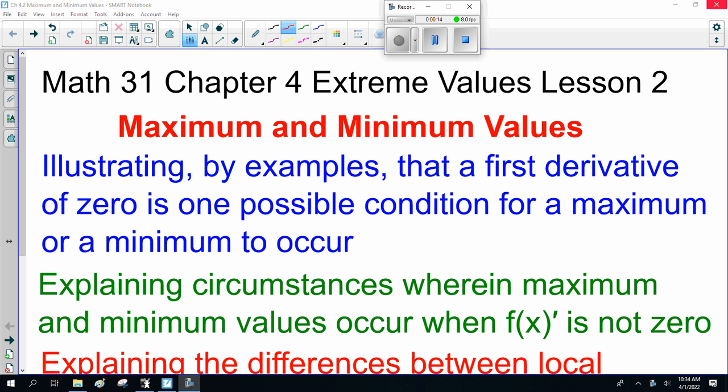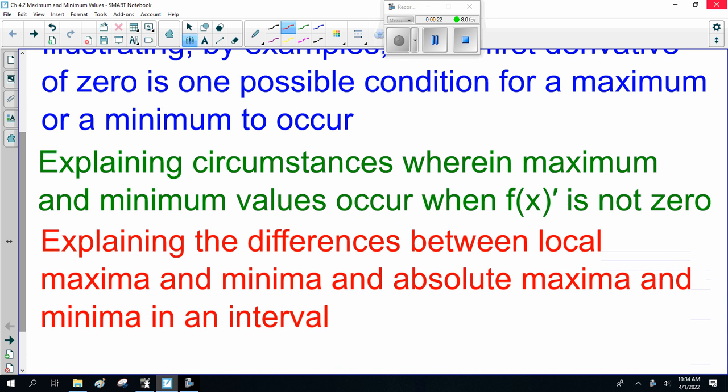Today we're going to be illustrating by examples that a first derivative of zero is one possible condition for a maximum or minimum to occur. We'll be explaining circumstances wherein maximum and minimum values occur when f'(x) is not zero. And we'll be explaining the differences between local maxima and minima and absolute maxima and minima in an interval.